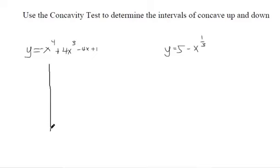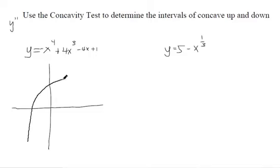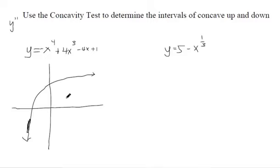A function is concave up if the slopes are increasing. Concavity is talking about the second derivative, y double prime. So if we have a graph that is increasing — the slopes are all positive everywhere — but it's concave down because the slope goes from maybe 9 here to maybe 1 over here. The slopes are getting smaller, so this is a concave down graph.